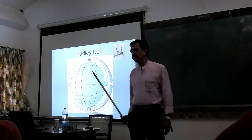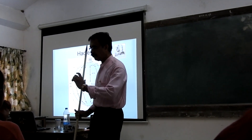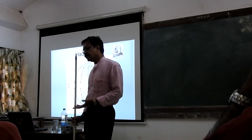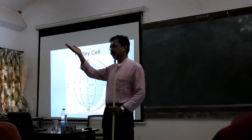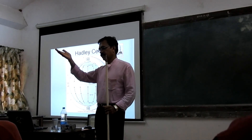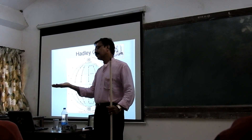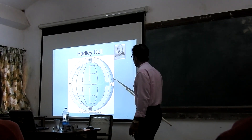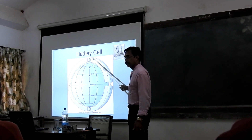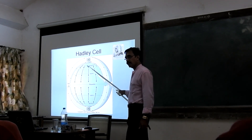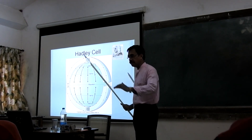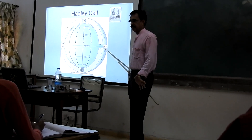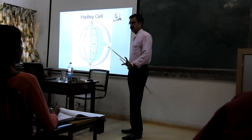Now if you look at the equatorial region, the energy is supplied here. When the energy is supplied here, the equatorial region gets heated. When the atmospheric temperature increases, density of the air decreases and then it rises. So this air is rising and then it goes over to the polar region, because at the surface polar region the temperature is around -1 degree — there is a cold sea surface.